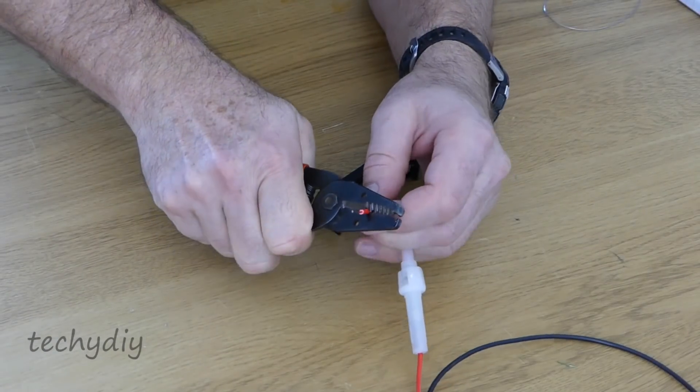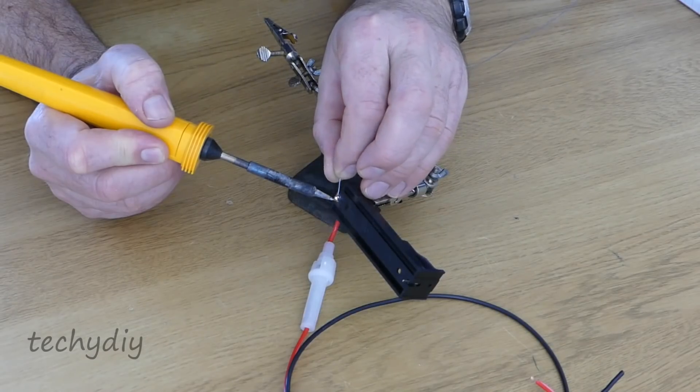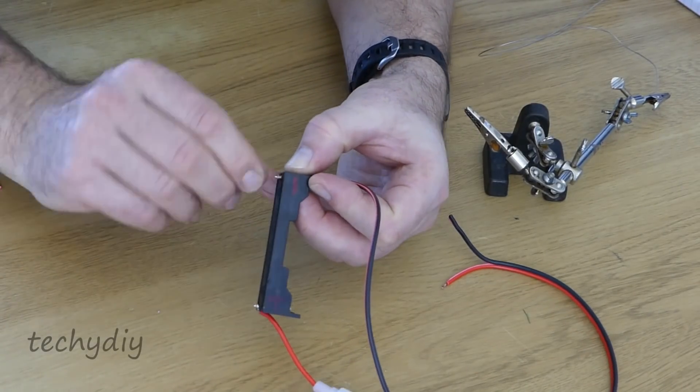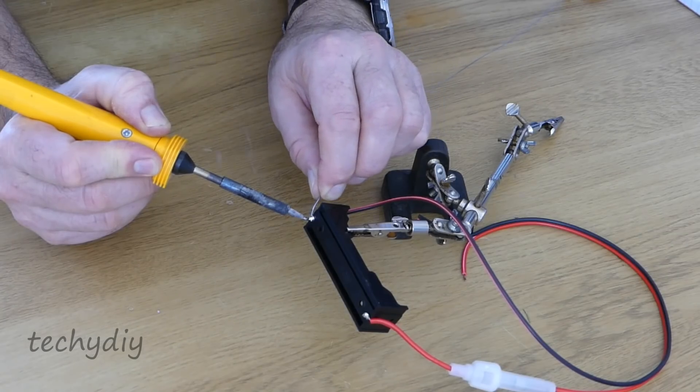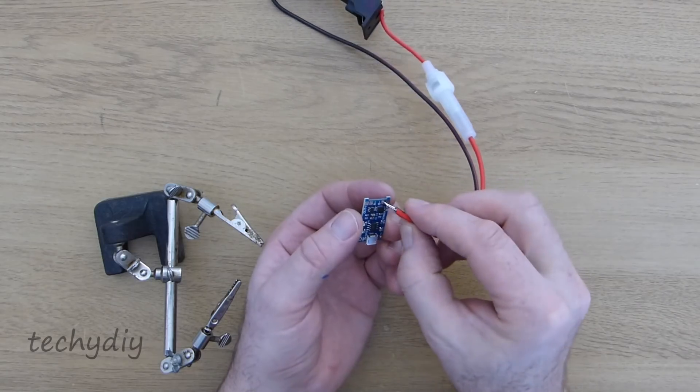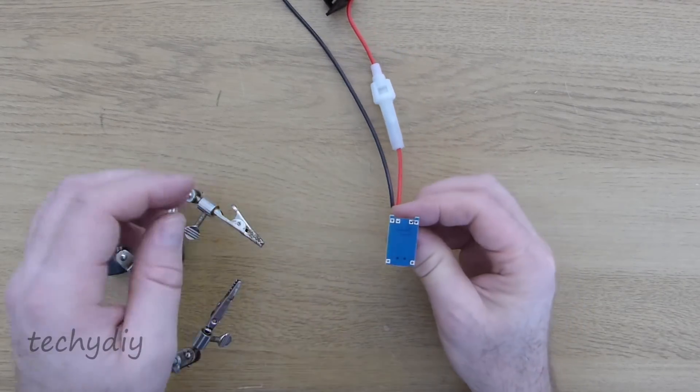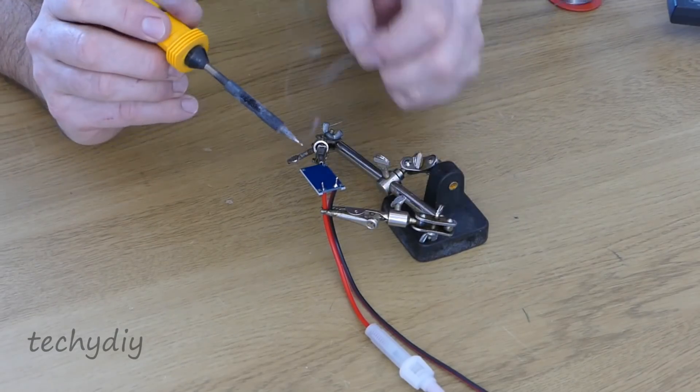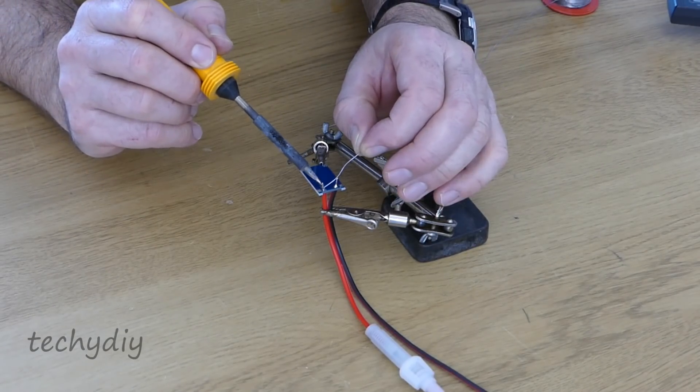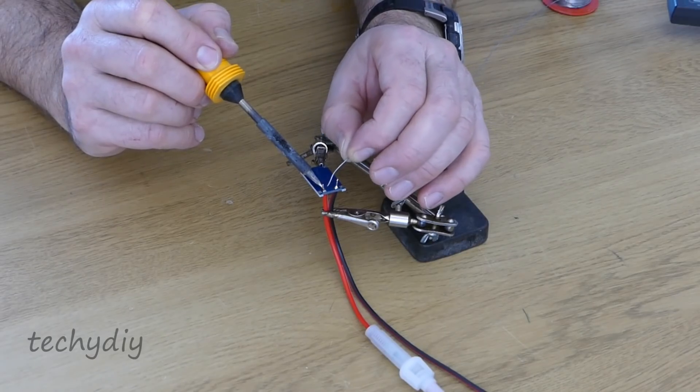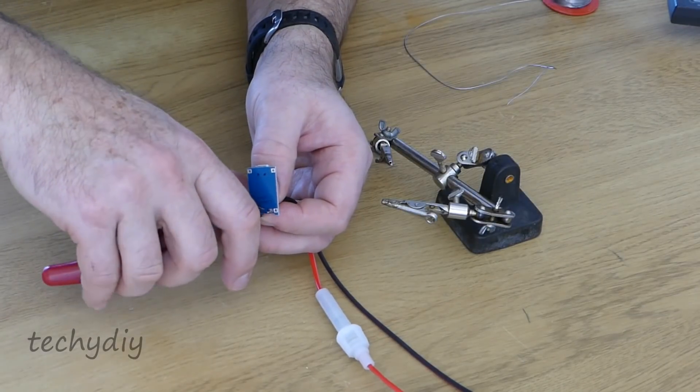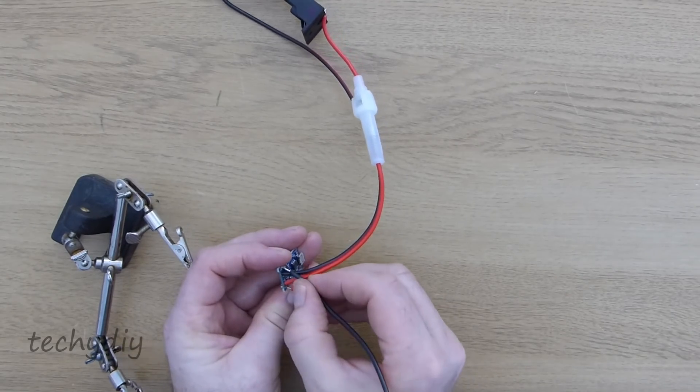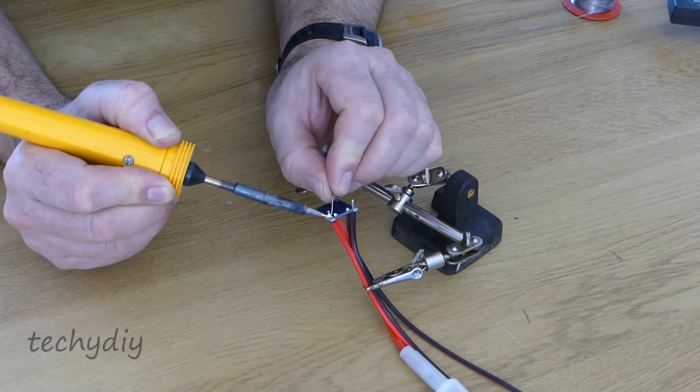Then the DC cable is soldered to the battery holder. And the other end of the DC cable is soldered to the battery input of the TP4056 module. Making sure that the polarity is correct or you might see a puff of magic smoke.